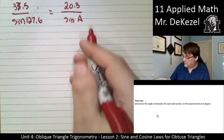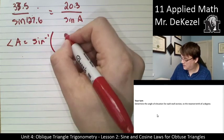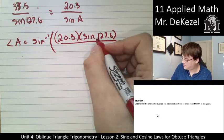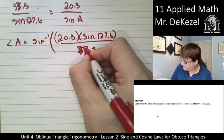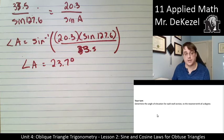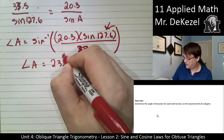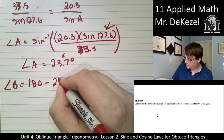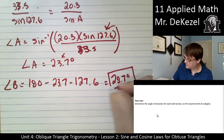So what I'm going to do is I'm going to rearrange to find A. So angle A is going to be equal to the inverse sine of 20.3 times the sine of 127.6 divided by 33.5. And what we get for angle A is 23.7 degrees. I can now use the 180 degree rule to subtract the two angles that I know right here and right here from 180 to find out what angle B is. Angle B is 180 subtract 23.7 subtract 127.6 to get 28.7 degrees for angle B.